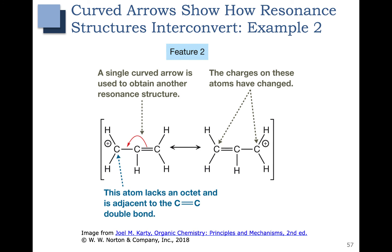Here's another example where we have a positive charge, so we're moving electrons towards that positive charge. The red double bond moves over. Notice that we move the electrons - the bond - not the positive charge. Electron flow arrows move electrons, not charges. The charge moved as a consequence of moving those electrons. Over here this carbon has a formal charge of plus one; now it has four bonds and a formal charge of zero. This other carbon had a formal charge of zero, but when it lost these red electrons, it now has a formal charge of plus one.